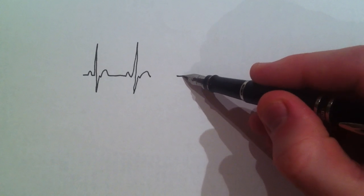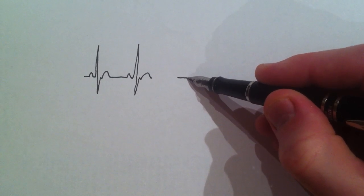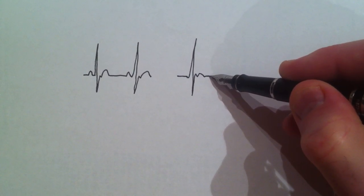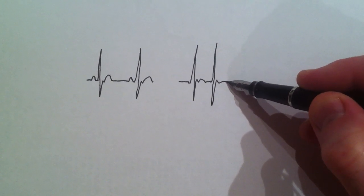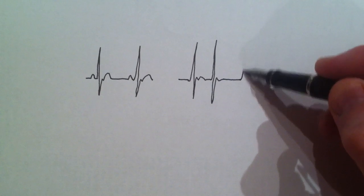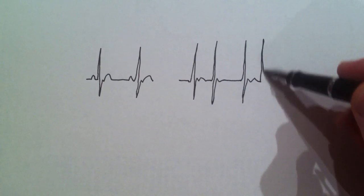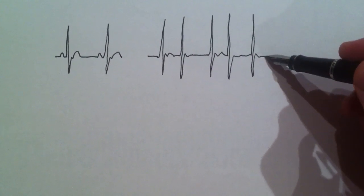In atrial fibrillation, there is no P-wave, so the first impulse is lost. Just a QRS with normal shape, followed by another one at a random interval later, sometimes very fast.